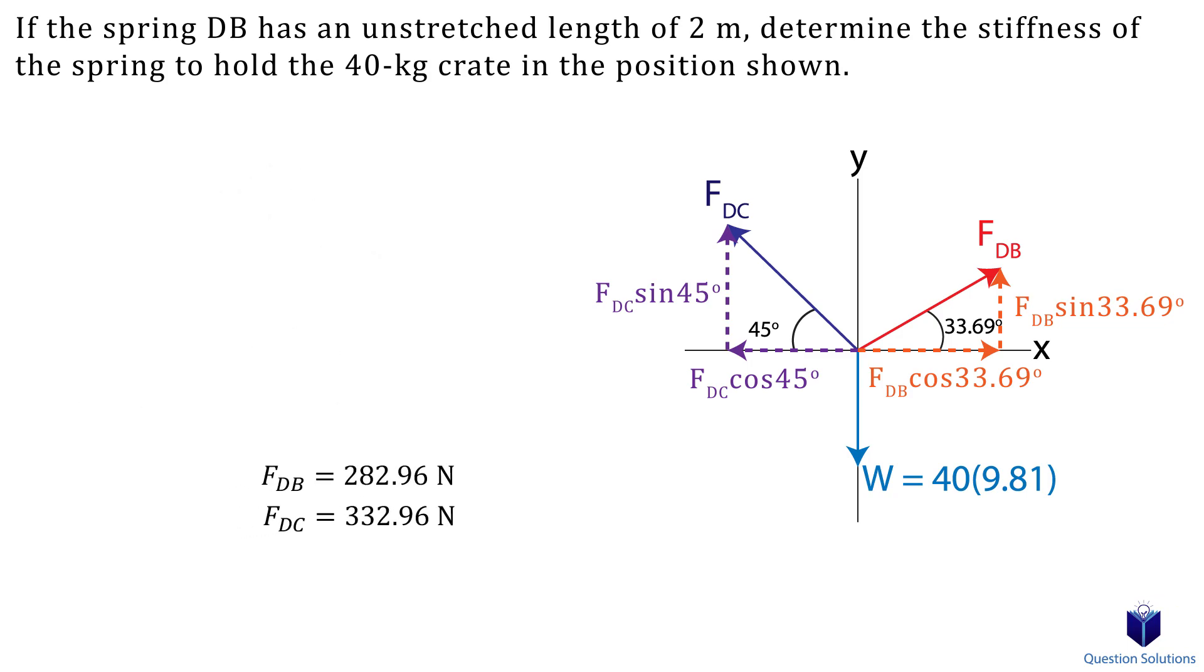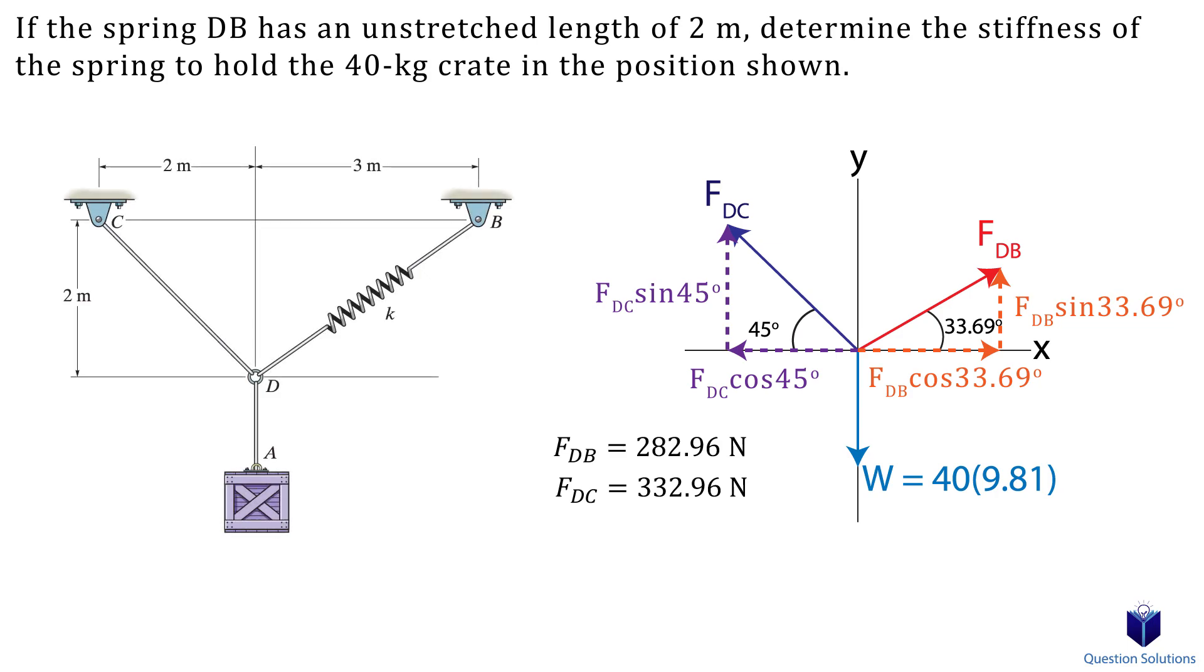So we figured out the force in the spring. The question tells us that the unstretched length of the spring is 2 meters. Let's figure out the length of the spring after it was stretched. We can use the Pythagorean theorem for that. This tells us the current length of the spring. Let's subtract the initial length from this value to figure out how much it stretched. So the spring stretched 1.61 meters after the crate was hung. Now we can use Hooke's law to figure out the stiffness. The force is what we found before, so that's the force in spring DB. The x-value is the length the spring stretched. Let's solve and that's our answer.